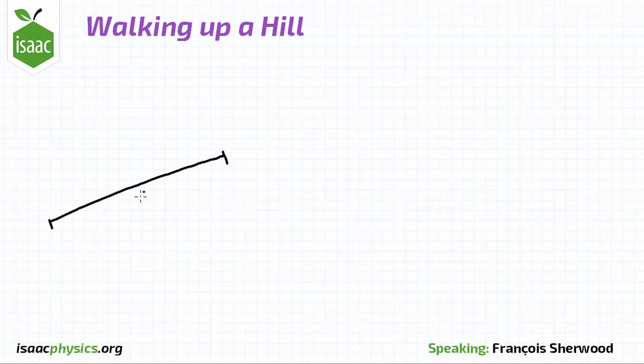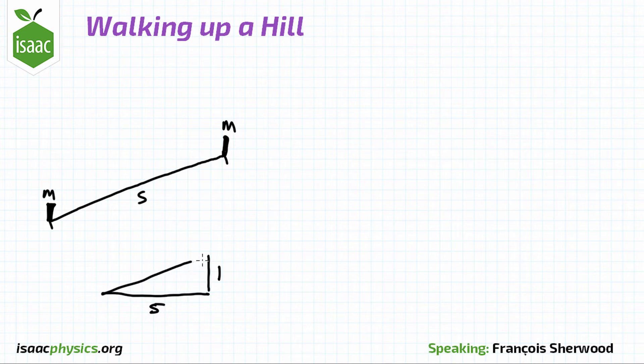A man of mass m walks a distance s up a hill with gradient 1 in 5. That is, for every 5 meters moved horizontally, 1 meter is climbed vertically.